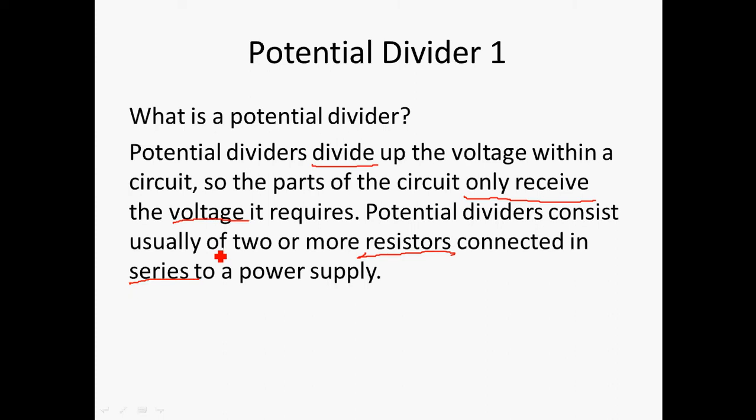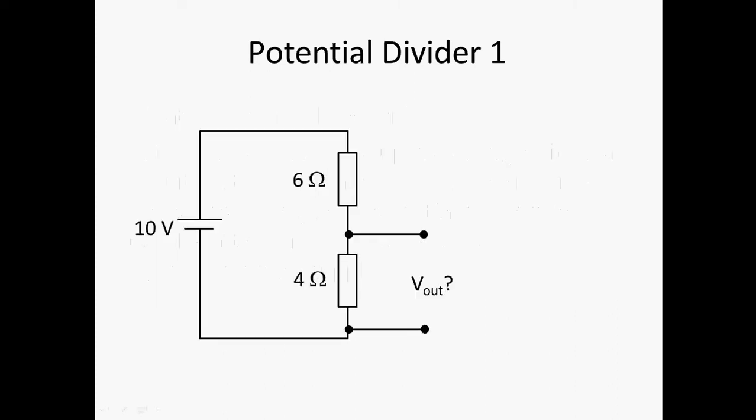Let us look at one example of a potential divider. So this is an example of a potential divider. What happens is that the 4 ohm and 6 ohm resistors are connected in series to a 10 volt power supply. So if I want to find the output voltage at the 4 ohm resistor, how will I do it?